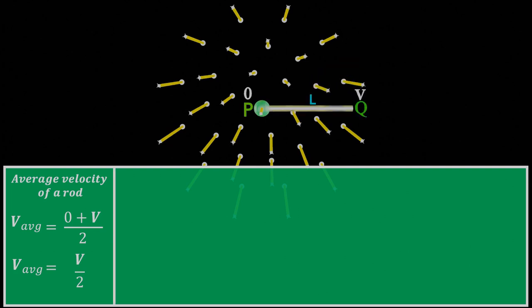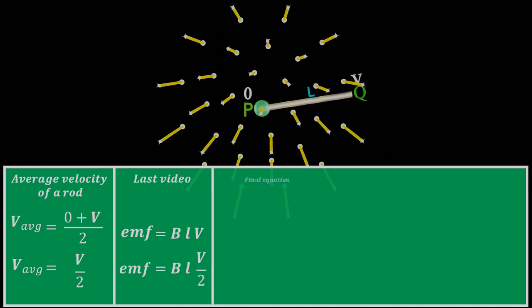As we learned in our last video, the equation of Motional EMF induced in a conductor due to its linear motion is BLV. By putting the average velocity of a rotating rod in the equation BLV, finally we get ½BLV, which is similar to the last equation.